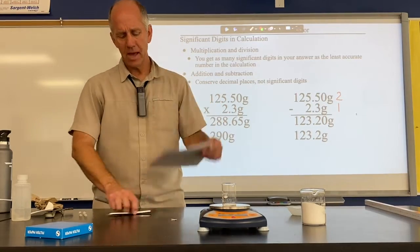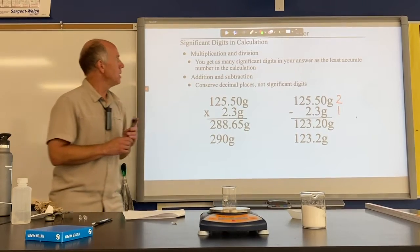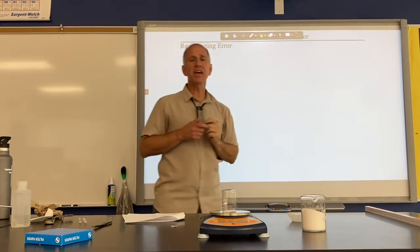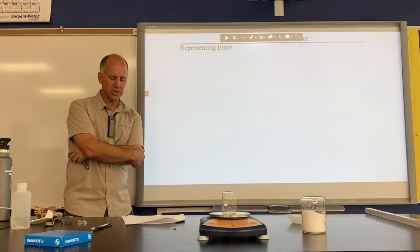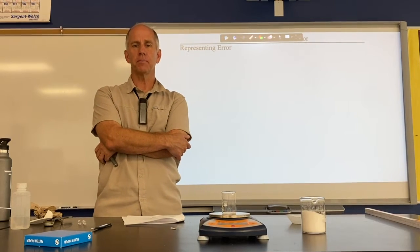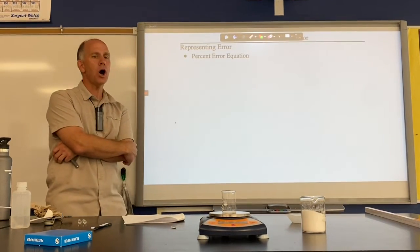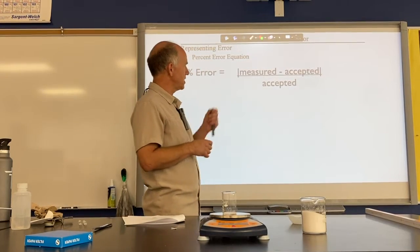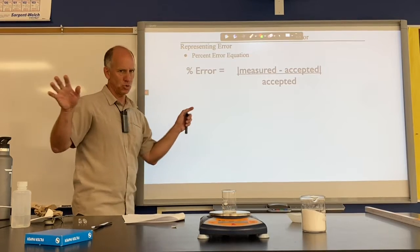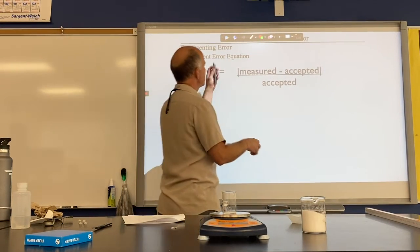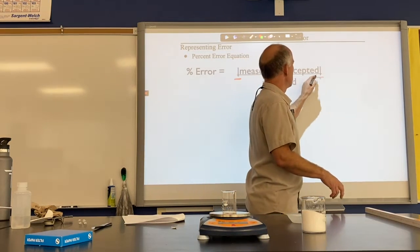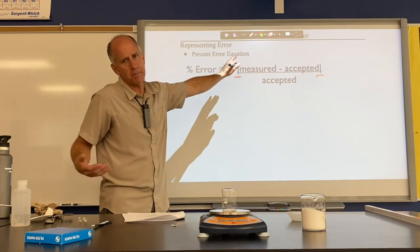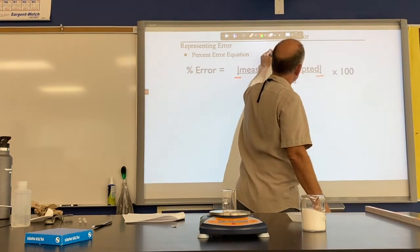One last thing and then our time together is done. When we collect data in lab, we talked about significant digits and accuracy — but we actually measure accuracy, and we call it percent error. You have the equation in front of you. Percent error equals the absolute value of (measured minus accepted), divided by accepted, times 100. The vertical bars are absolute value, meaning just not negative.